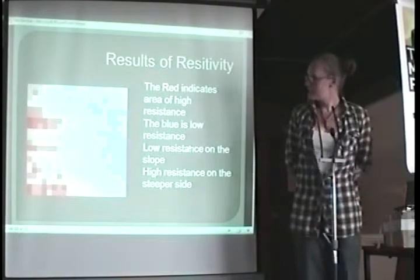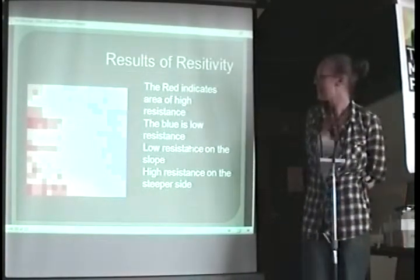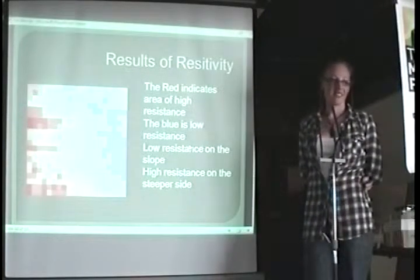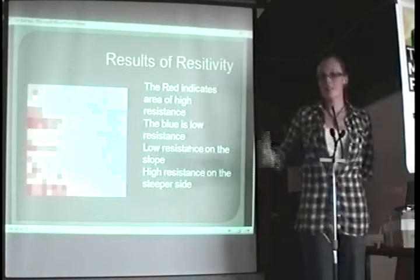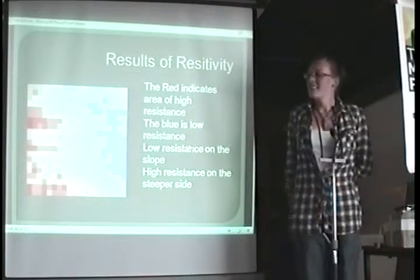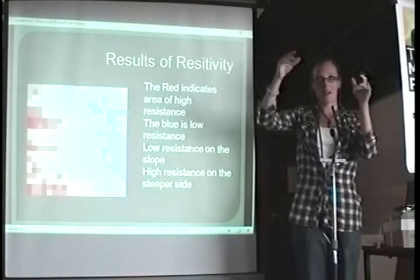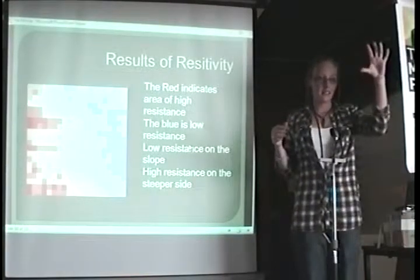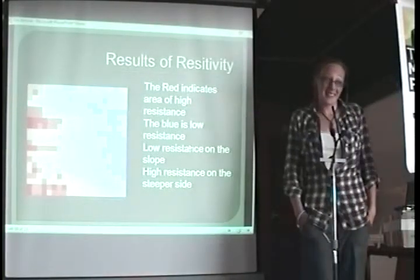So this is the results of the resistivity. As you can see, hugely confusing. Not very easy for somebody who doesn't know about it to understand. I can assure you even I have struggled with that. The red area indicates the areas of high resistance. The blue area is indicating the areas of low resistance. What's fairly interesting about it is you would expect where the steeper side is to be fully highly resistant, which is where the red is, but it isn't. The low resistance here, in the blue, shows the slope going down from it. So you have the steep bank and then the slope. The steep bank is highly resistant, whereas the slope is very low resistance, which doesn't really match our characteristics of a barrow, to be honest.